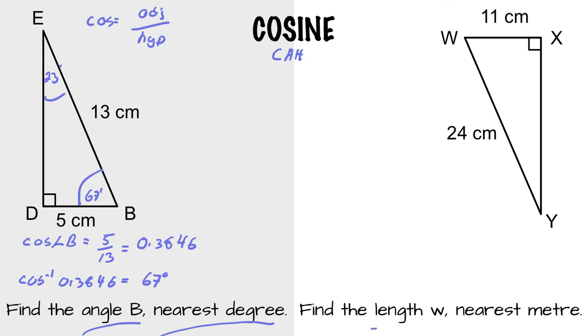Now let's find the length of W to the nearest meter. Remember W, lowercase w, is opposite the vertex capital W. Again, we're restricted to use cosine. So we can't go from Y's perspective. So we must go from W.